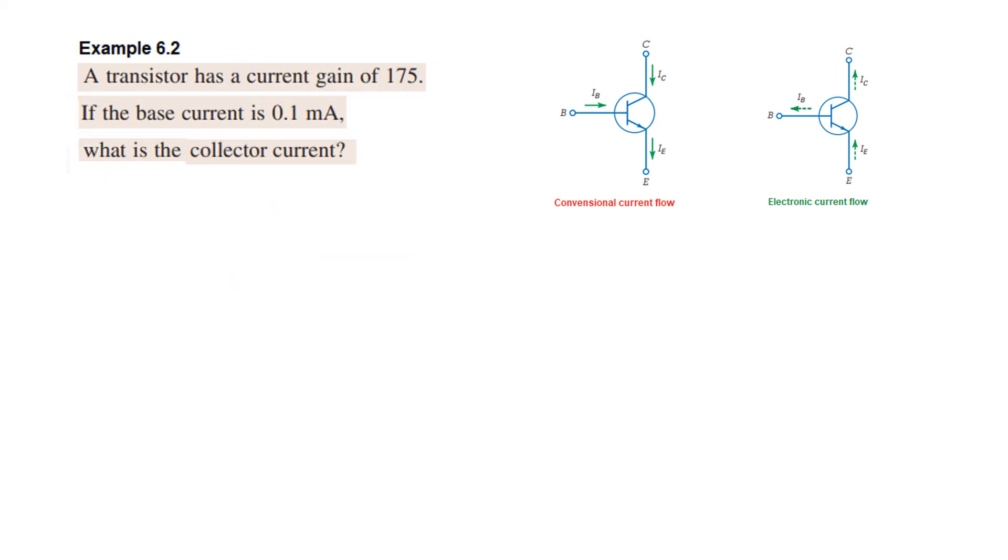The next example. The transistor has a current gain of 175. If the base current is 0.1 milliampere, find the collector current. So this is also easy. The beta DC is given, 175. And the base current, 0.1 milliampere.